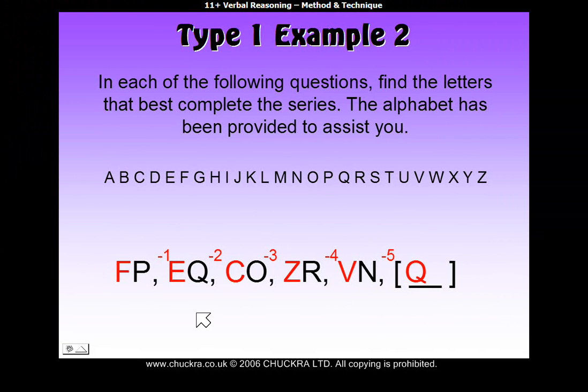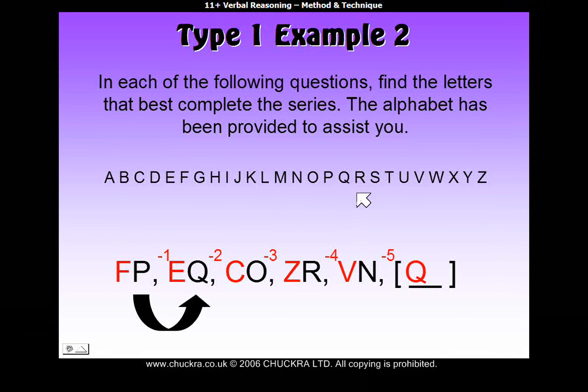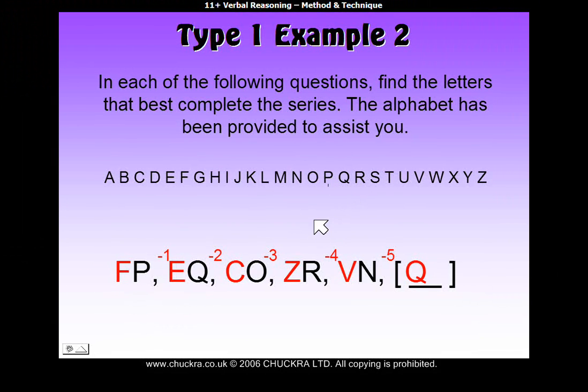We now need to go on and find out what the second letter is. So, looking at all of the black letters. So, from P to Q, that's just forward one, from P to Q. So, we can write plus one.